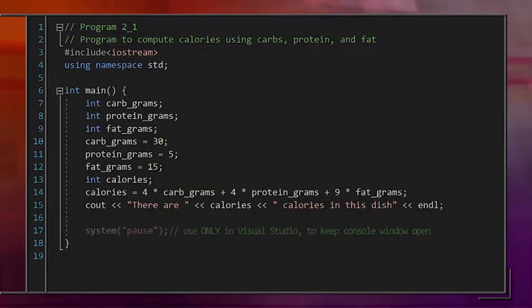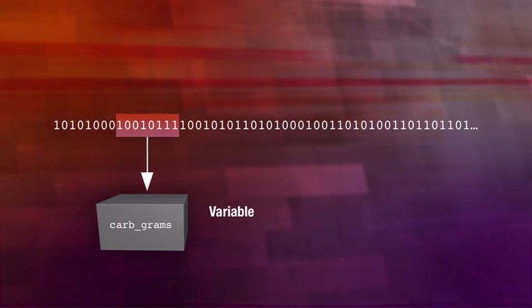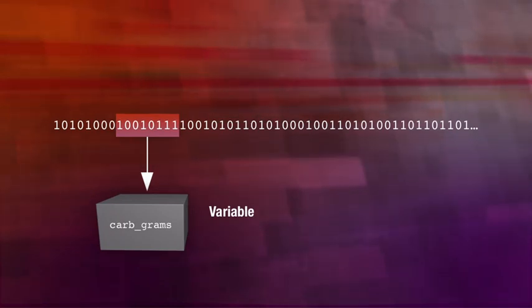For example, we could declare an integer type variable that we name year. The code for that would be int year, where int is short for integer — any counting number like zero, one, or two, or even negatives like minus ten. In our calorie counting program, the line int carbgrams gives the two pieces of information needed: first the type, which is int, and then the variable name, carbgrams. The variable name is the way we refer to that box of memory, and it's often called the identifier.